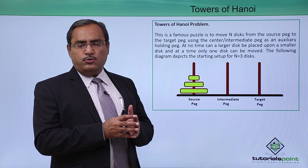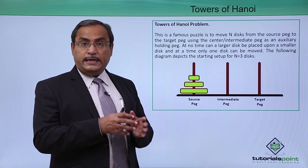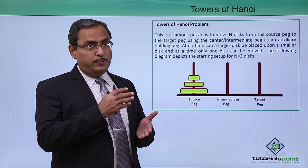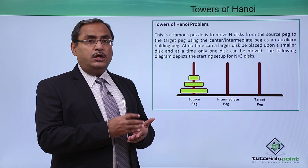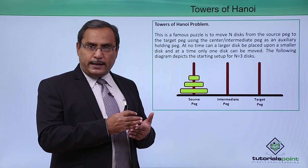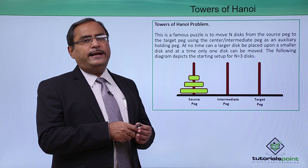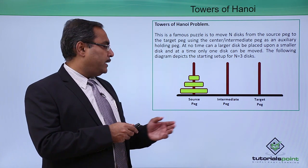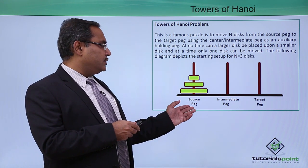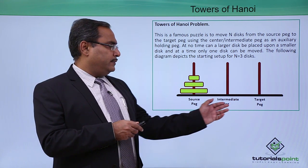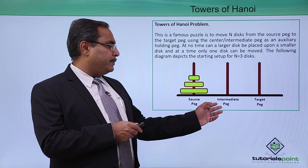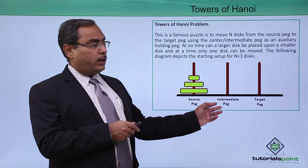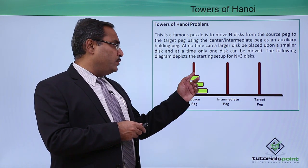The value of n will be supplied by the user, so that number of disks are to be moved from the source to the target peg, keeping the intermediate or center peg as auxiliary peg. This is the source peg, this is the target peg, and this is our intermediate peg.